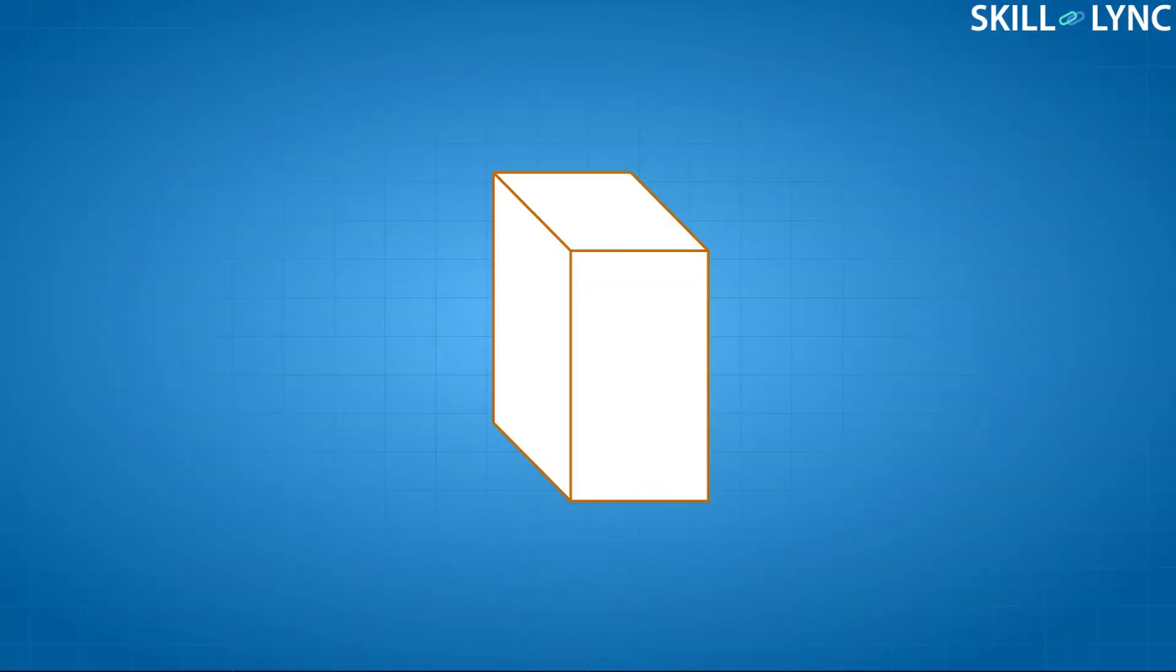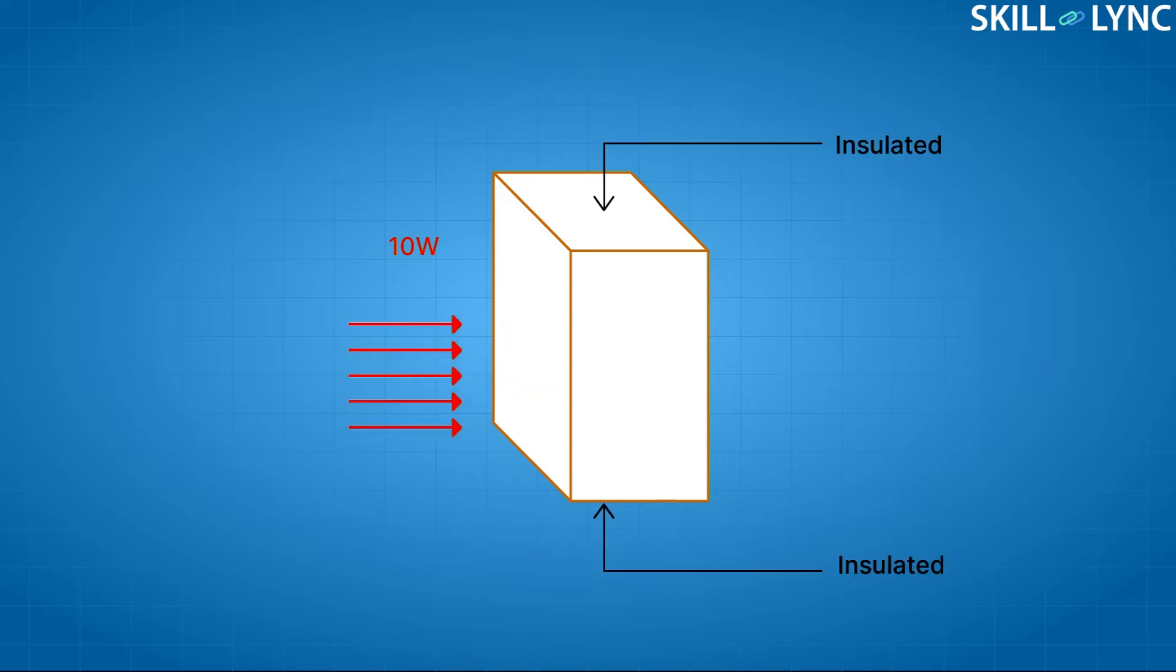Volumetric source is commonly encountered while performing energy balance. Let us consider a rectangular plate. Let Q be the quantity of heat that comes in, and we are going to assume that Q equals 10 watts. The top and bottom walls of the rectangular plate are adiabatic. That is, there is no heat transfer taking place in both these directions.